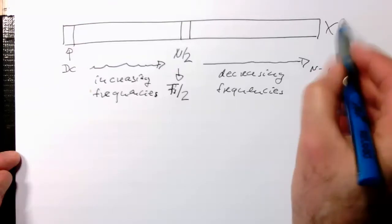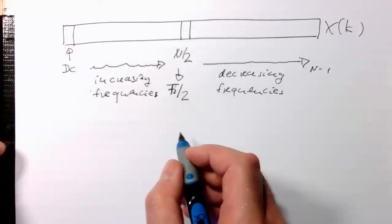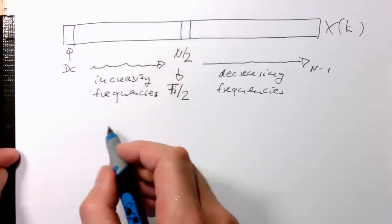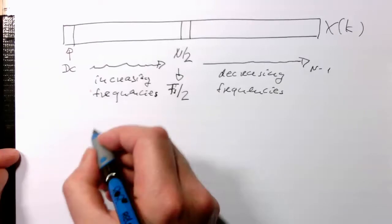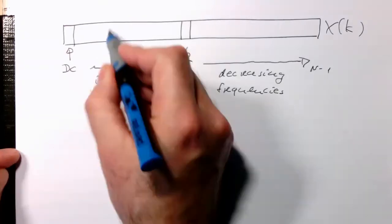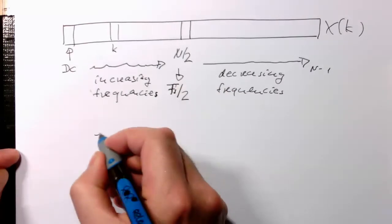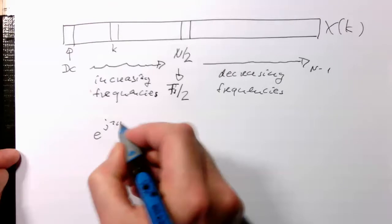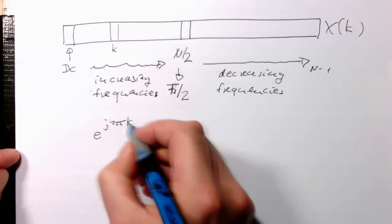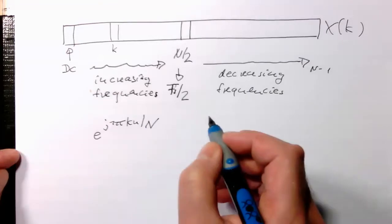So here's our x of k. How can we understand that? Let's have a first look here. Remember that this index k creates a phasor, a moving complex vector which looks like that.